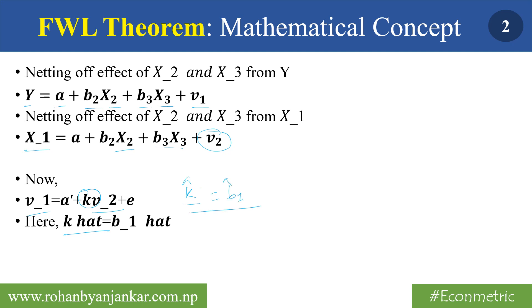It means that Y equals to a plus B1 X1 plus B2 X2 plus B3 X3 plus E1, and this k hat equals to B1 hat. This is the value we have obtained, and this is called FWL theorem.